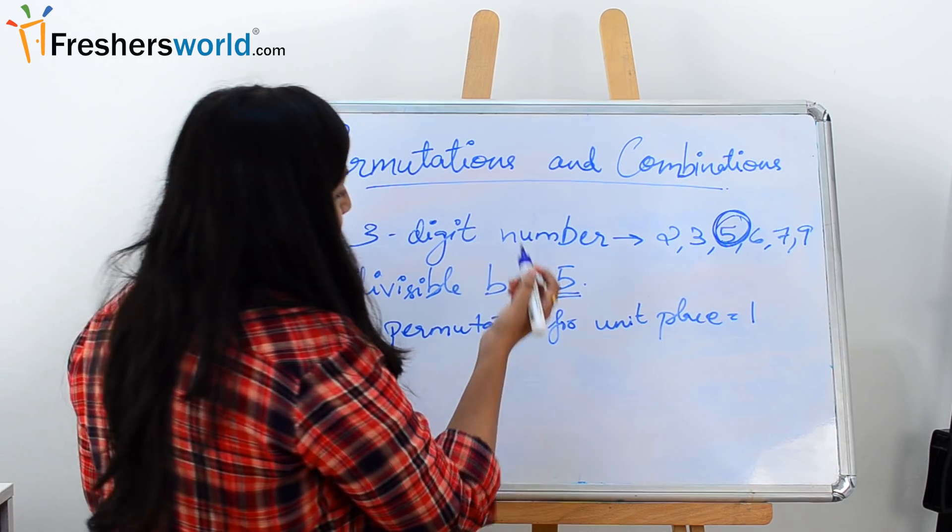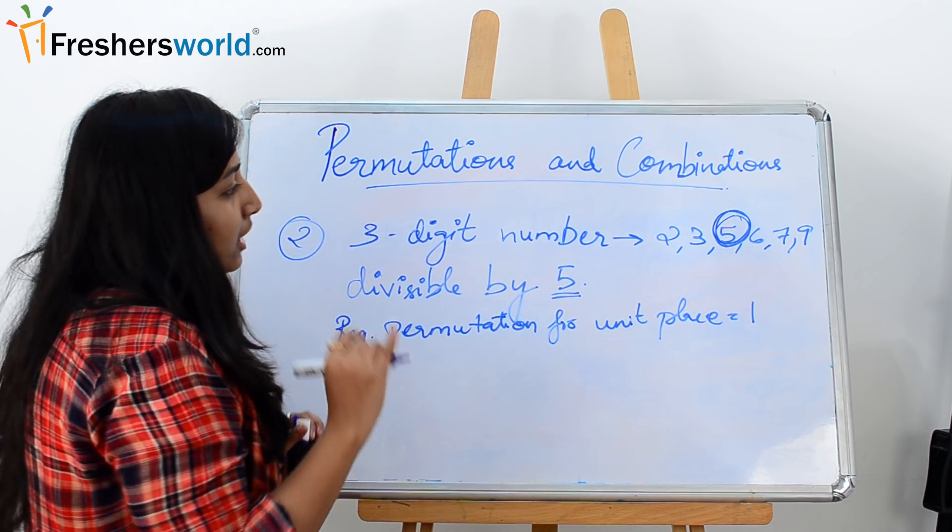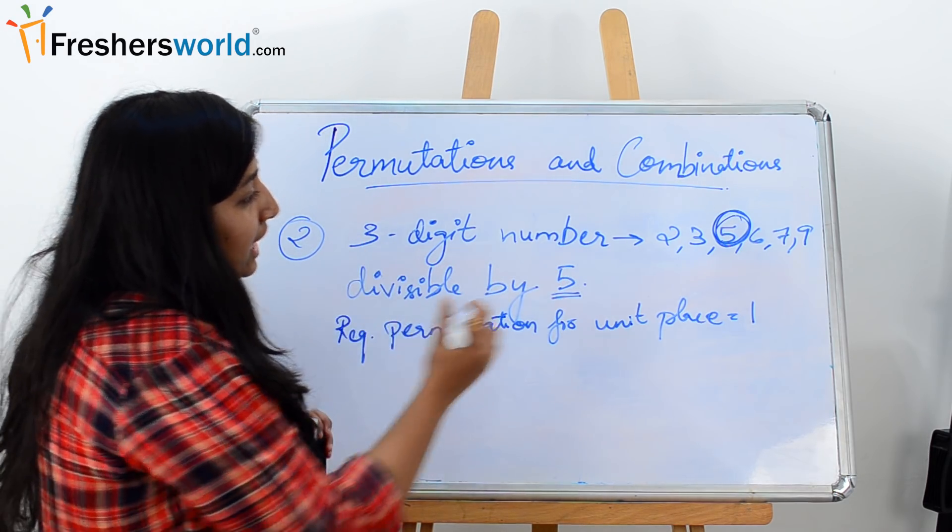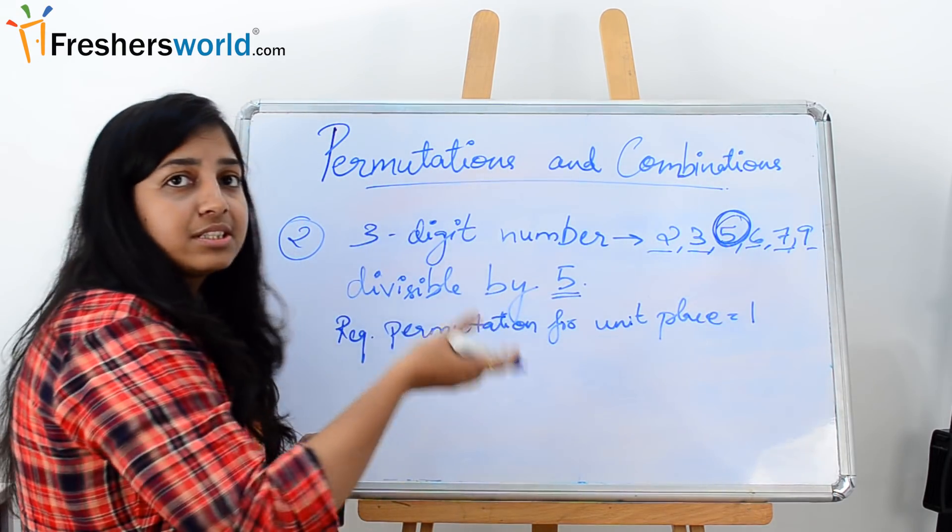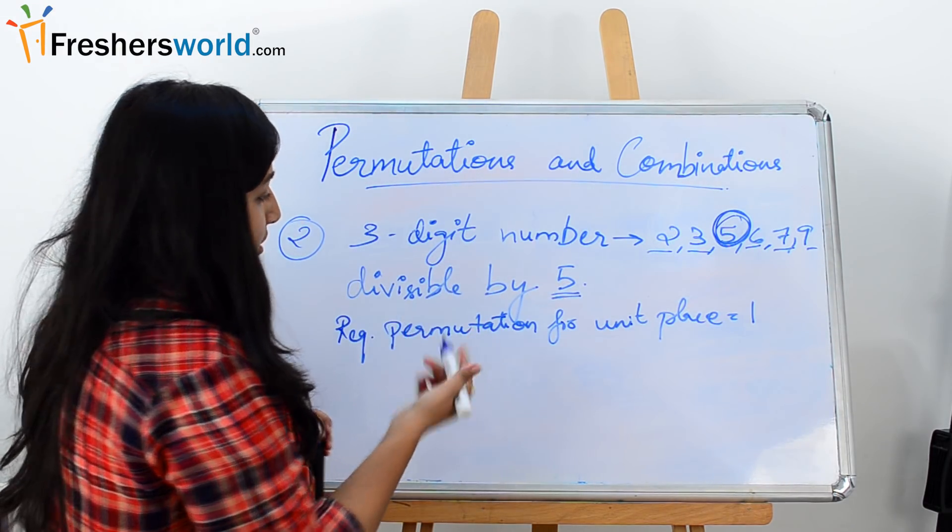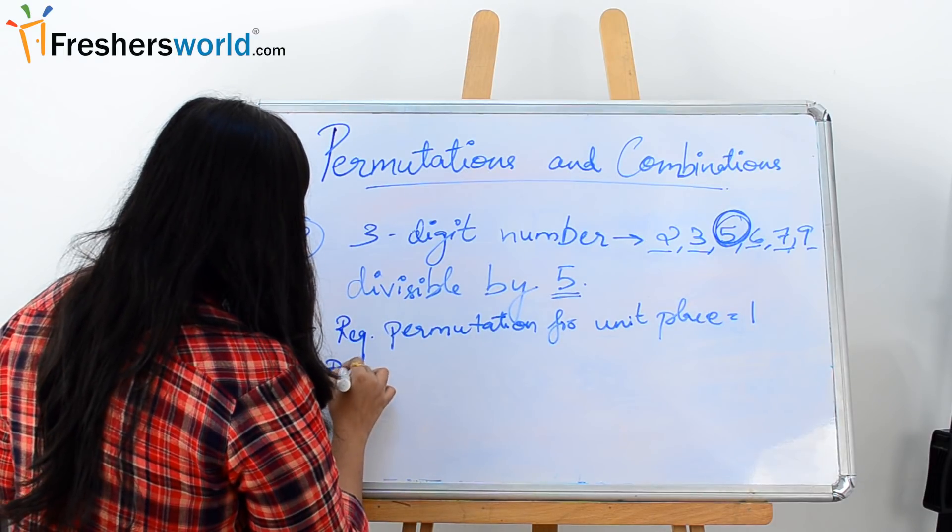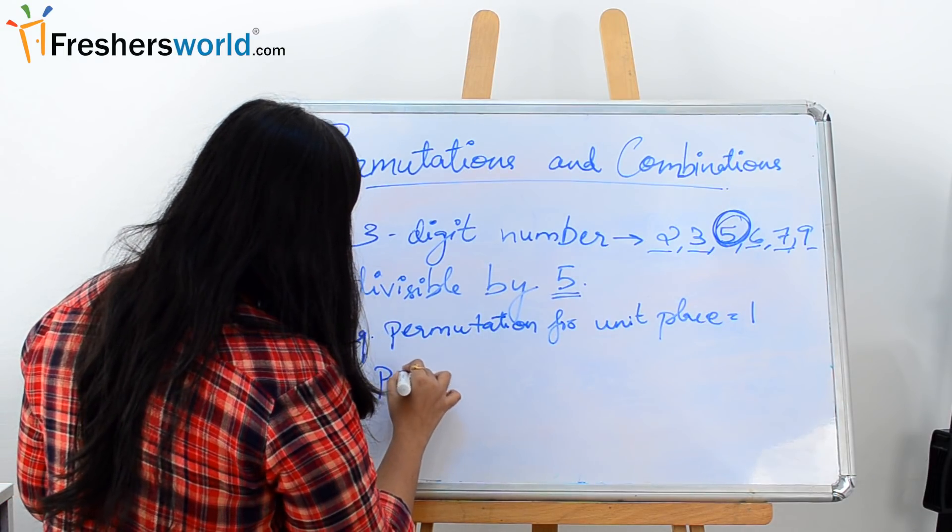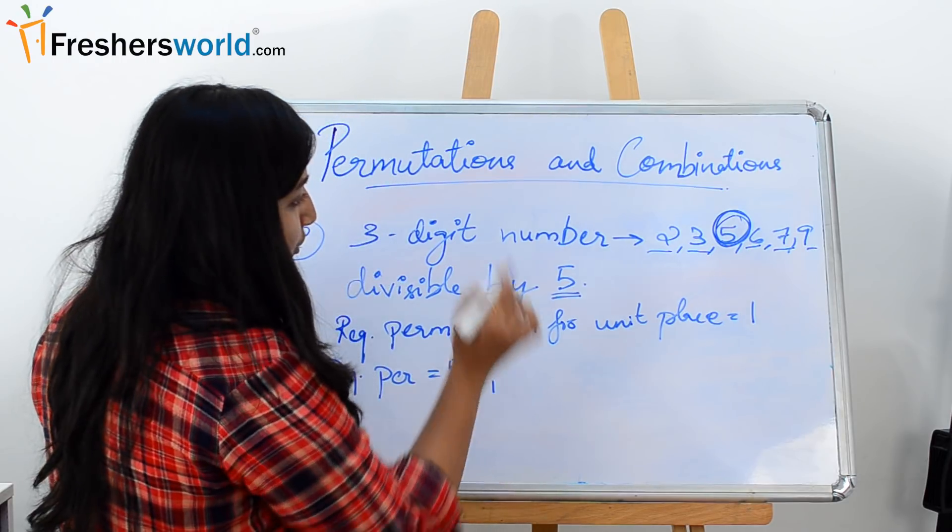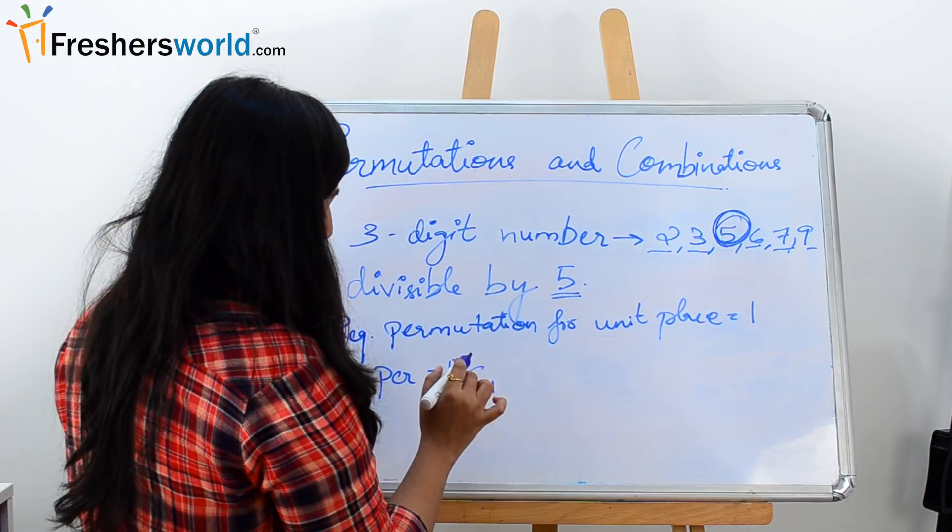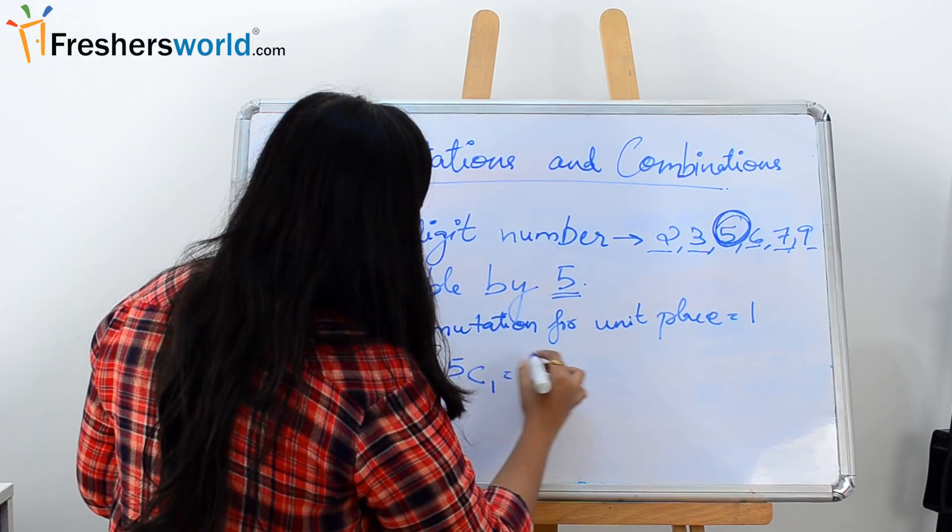Now next, we will take the 10th position. For the 10th position we have 5 digits, means any of these 5 digits can come in the 10th position. So what will be the required permutation for that? It will be 5C1 because there is one position and there are 5 numbers for the same. So it will be 5.